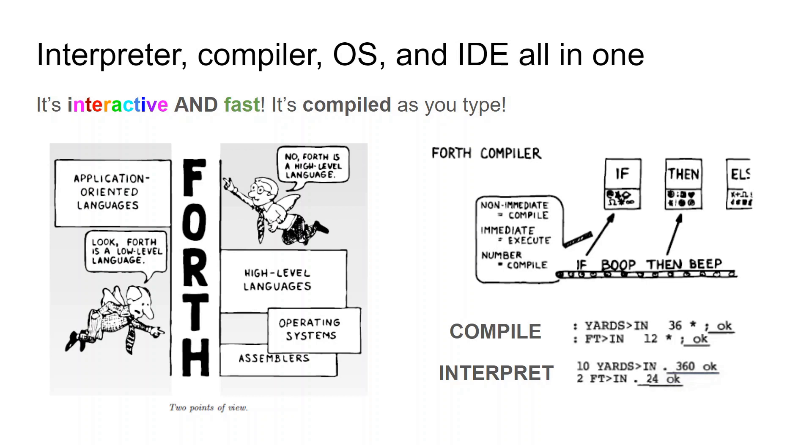On the right, I have an illustration from Thinking Forth in the top and then Starting Forth on the bottom for how the compiler and interpreter in Forth work. The first one on top on the right is just showing you how the compiler handles different words, whether they need to be compiled or immediately executed. And then the bottom shows the difference when you're writing Forth for what a compiled word would be versus a word that you're executing in the interpreter.